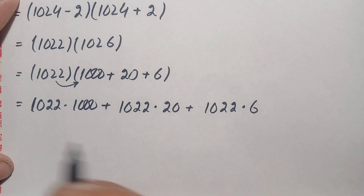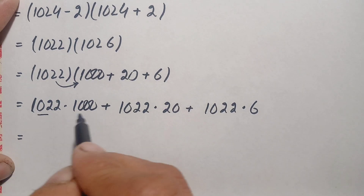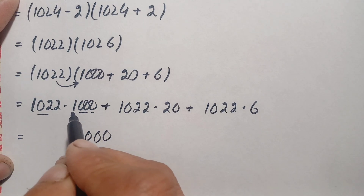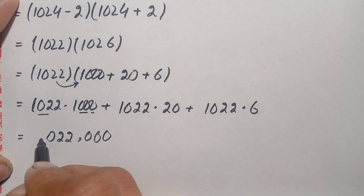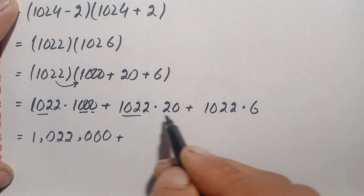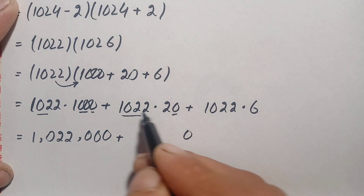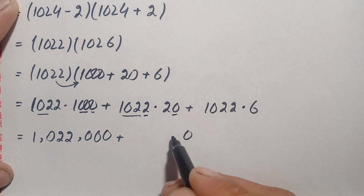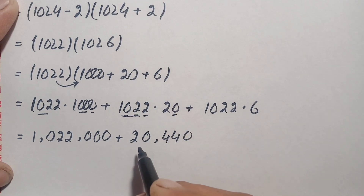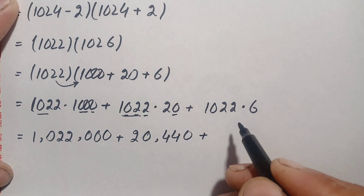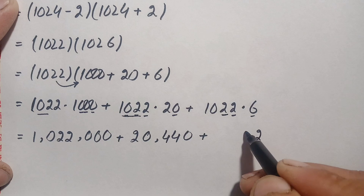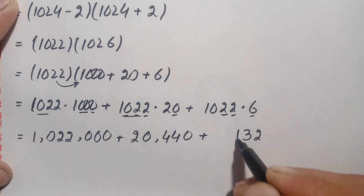Multiplying 1022 times 1000 gives 1,022,000. For 1022 times 20: 1022 times 0 is 0, and 1022 times 2 gives 2044, so 1022 times 20 is 20,440. For 1022 times 6: 6 times 2 is 12, carry 1; 6 times 2 is 12 plus 1 is 13, carry 1; 6 times 0 is 0 plus 1 is 1; 6 times 1 is 6 — giving 6,132.